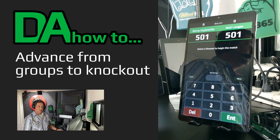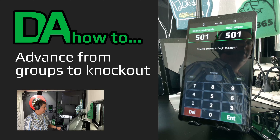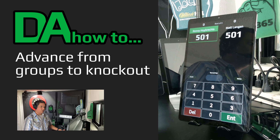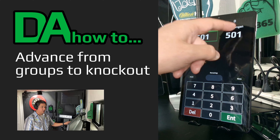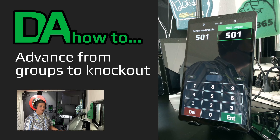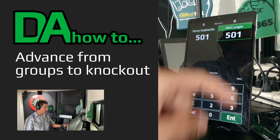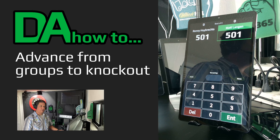The scoreboard will come up, and to select who throws first, tap their name or score, and that will be the first player whose score is entered. You can change the first thrower at any time before you start the leg.